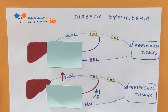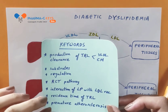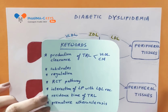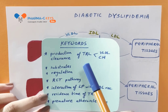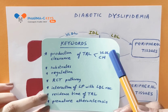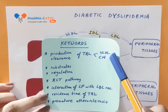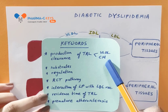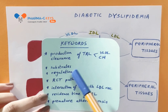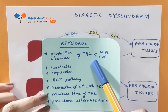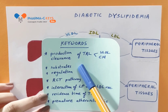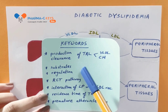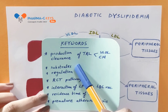So, let's take a brief of the keywords that we're going to use. The production of triglyceride-rich lipoproteins, whether they are VLDL or chylomicrons. The clearance of these lipoproteins. Blood glucose and free fatty acids, which are substrates.